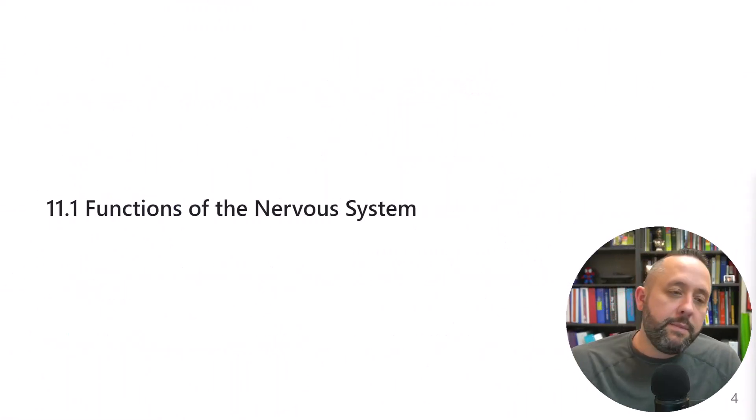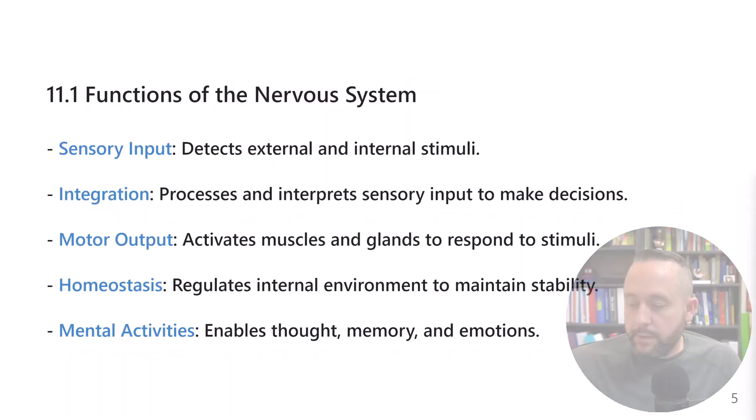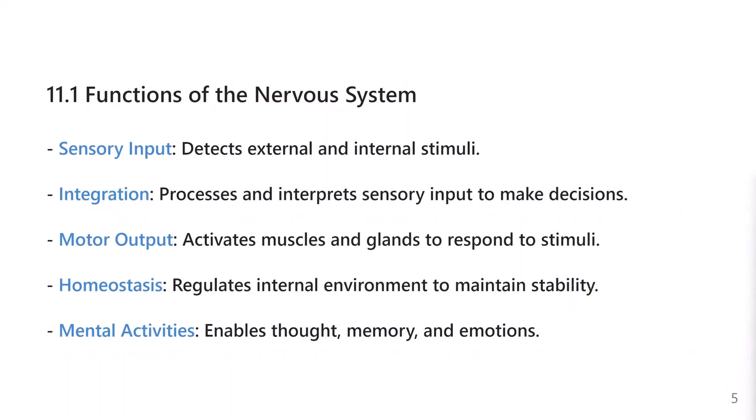Functions of the nervous system. Think about how we detect light. We have cells that can receive light signals or energy changes from photons. A photon is a particle of light. We have specialized cells that can receive that signal and transmit it to our brain for processing. Integration is where we take the information that came from our eyes, process it, and then perceive the sight that we're seeing.